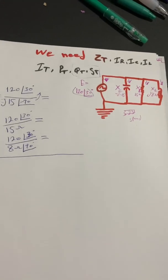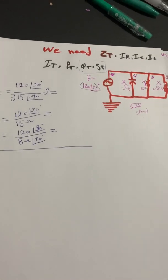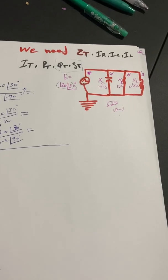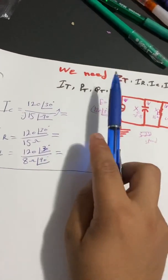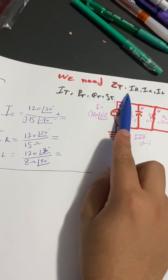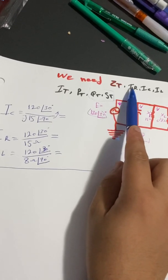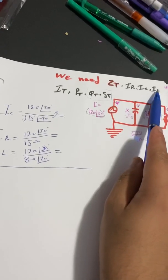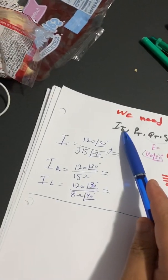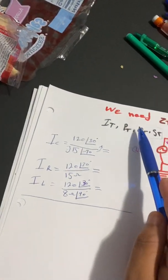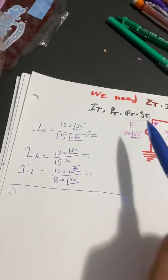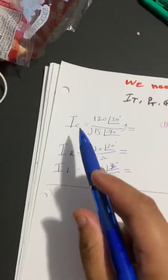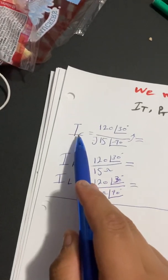Hello everybody, today we're going to solve an AC circuit which includes a lot of elements. We need to find the Z-total, IR which is the current in the resistor, IC and IL which are the capacitor and coil currents, and we also need to find the I-total, the power total, and of course the power factor of the circuit.